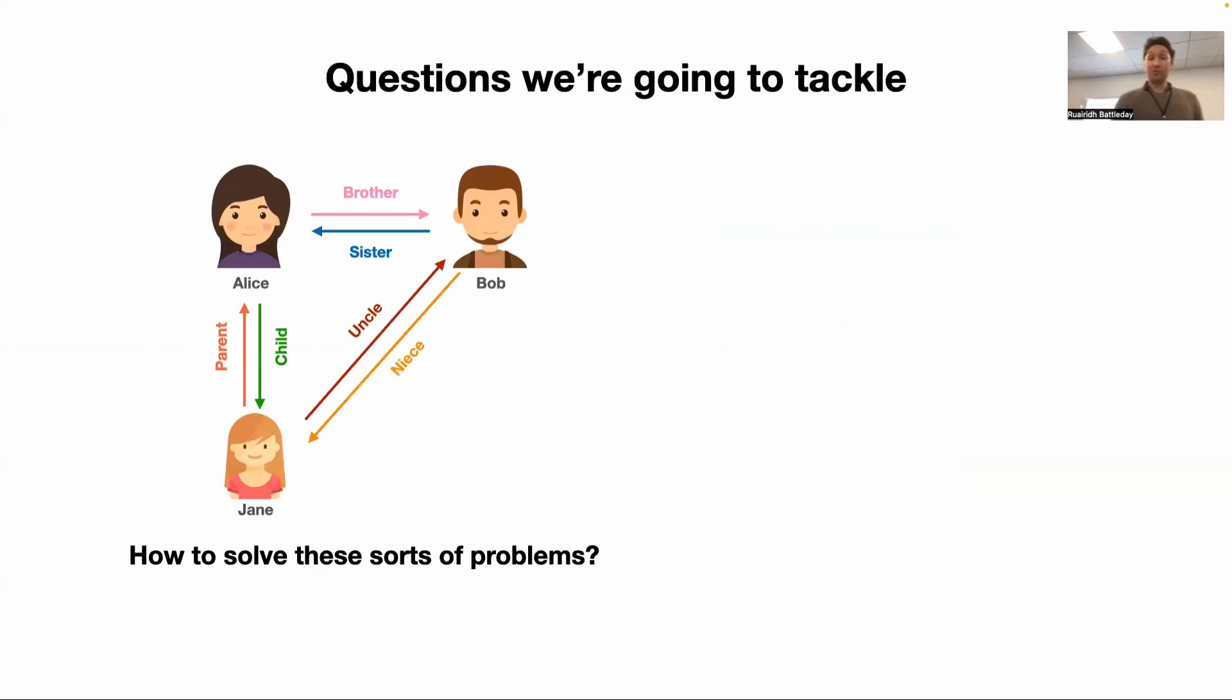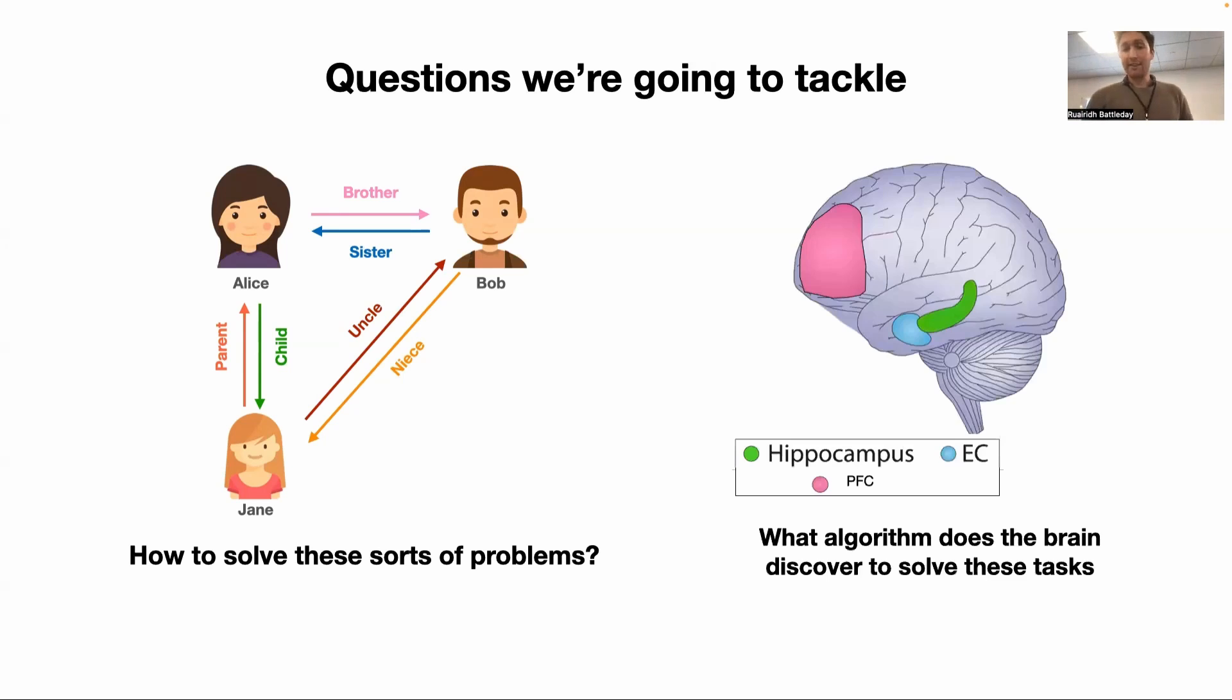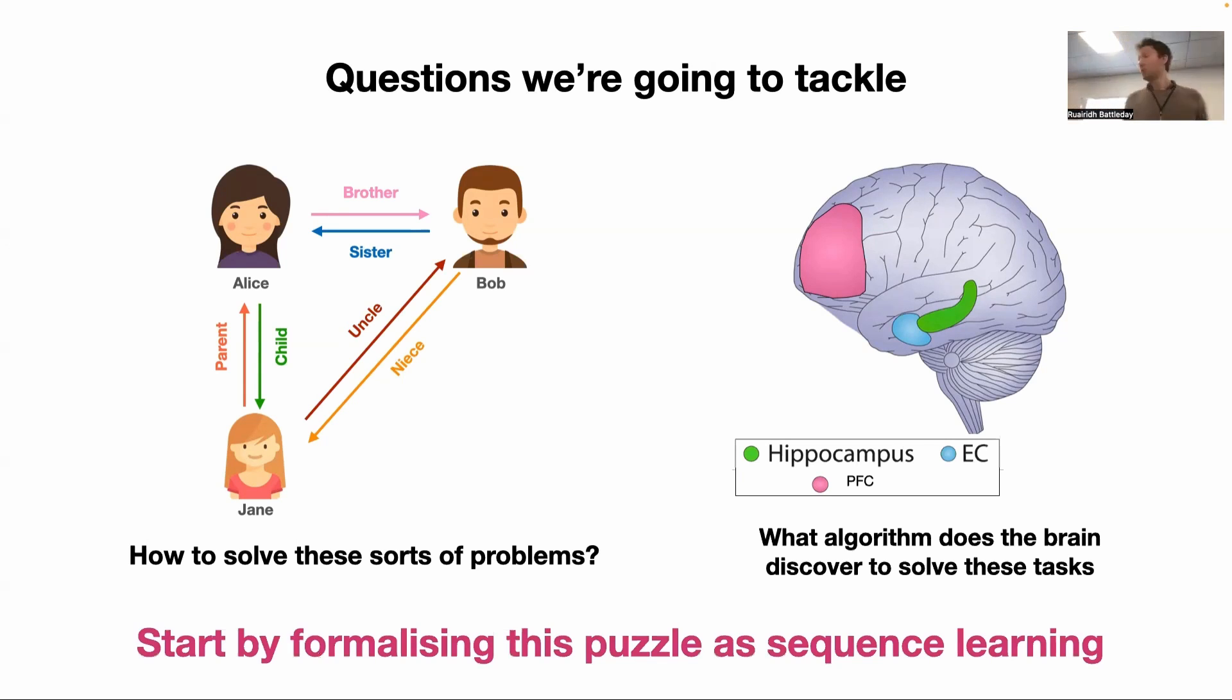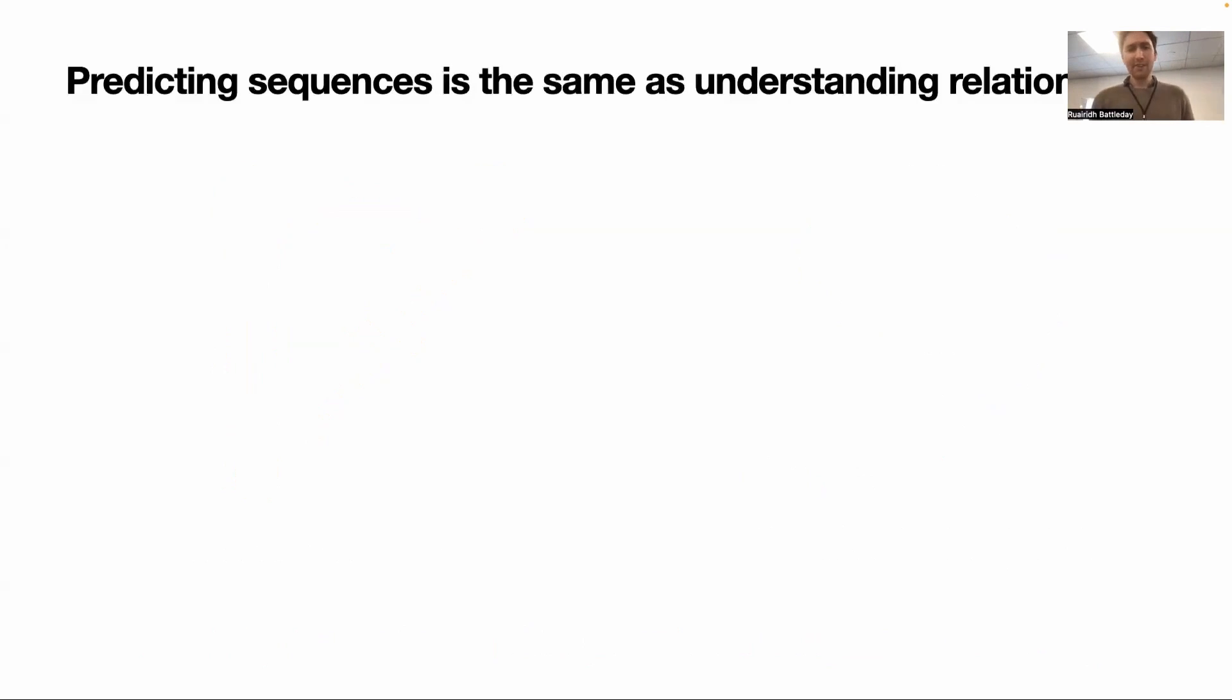The first questions we're going to try to tackle: how on earth do we solve these relational inference problems? How do we discover the right algorithms for them? And the second one is what algorithms is the brain actually using? Why has it got these two different things? I'm going to try to tackle these by really formalizing the puzzle, formalizing this puzzle of relational inferences as a sequence learning problem, the sort of thing that is bread and butter to machine learners.